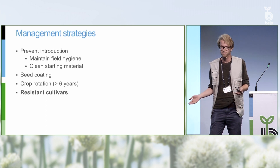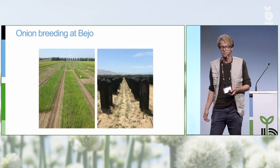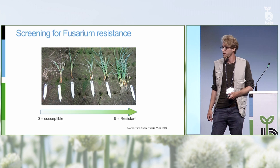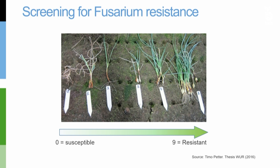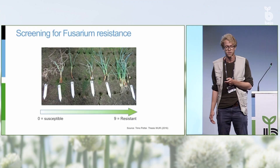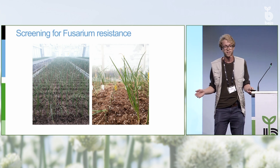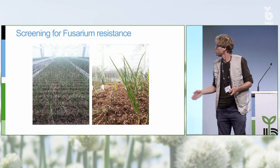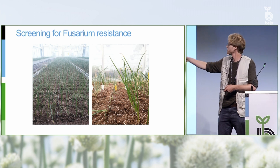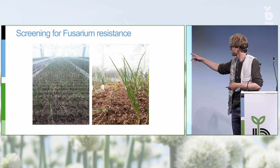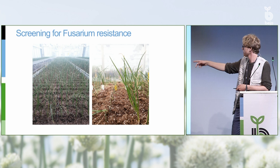An alternative would be to have resistant cultivars, and that's what we're trying to do at Bayo with breeding to get more and more resistant cultivars. At Bayo we have a screening program where we screen many lines for Fusarium resistance, and we developed a score from zero to nine — zero is the most susceptible and nine the most resistant. In the greenhouses we have this huge setup where we screen thousands of seedlings for resistance against Fusarium. In this picture you can clearly see a difference between a resistant line and a very susceptible one.